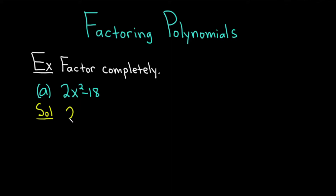You can write this as 2, parentheses, and then you ask yourself: what do you multiply by 2 in order to get 2x squared? Well, just x squared. And then you ask: what do you multiply by 2 to get negative 18? Well, negative 9. Then you should always check mentally. 2 times x squared is 2x squared. 2 times negative 9 is negative 18.